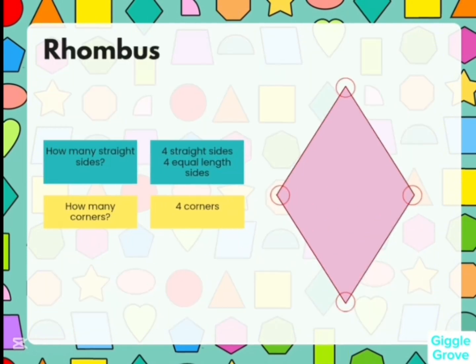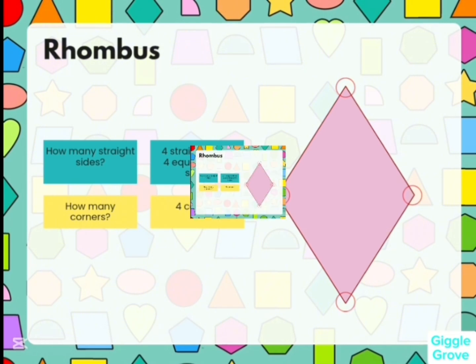Rhombus. How many straight sides? There are four equal sides, four equivalent sides. And how many corners are there? There are four corners.